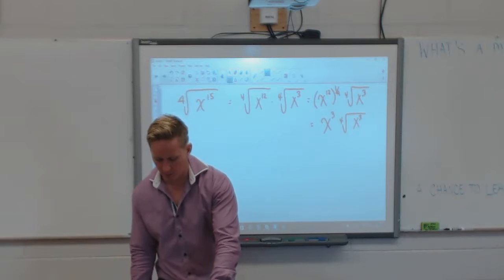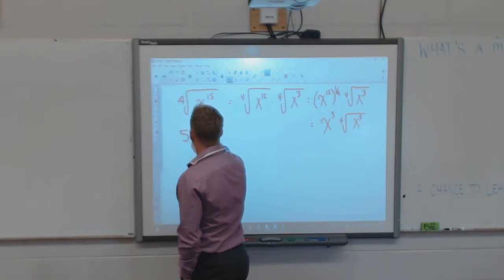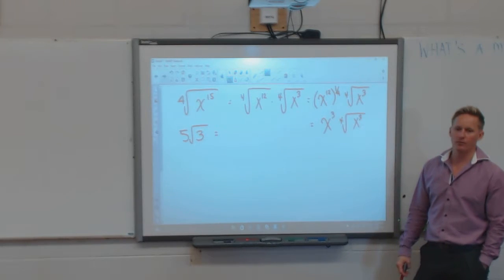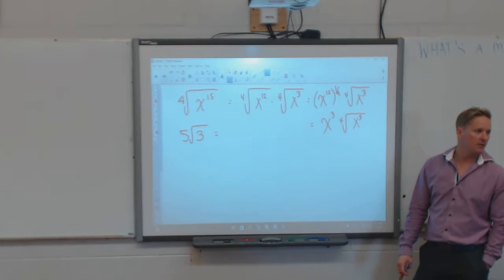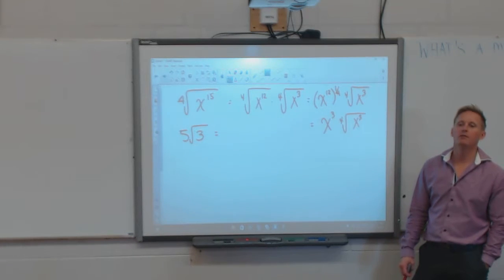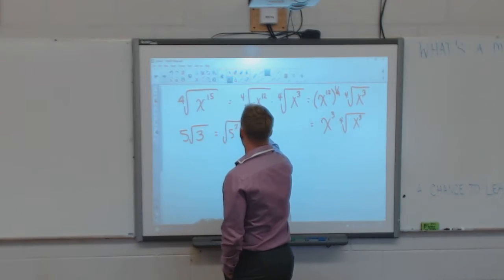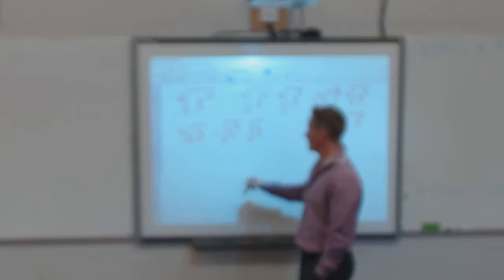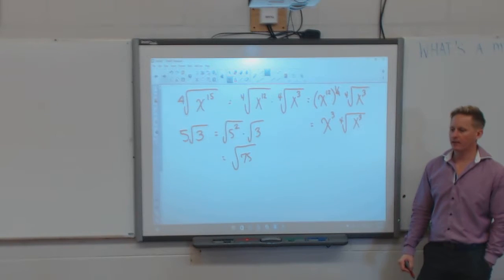Let's work through the ones in our book. We want to write 5 root 3 as an entire radical. How do I write 5 root 3 as an entire radical? What do I change the 5 to? The square root of 5 squared. So: square root of 5 squared times root 3. What is 5 squared? 25. 25 times 3 is 75. So the answer is square root of 75. Write that out in your book.